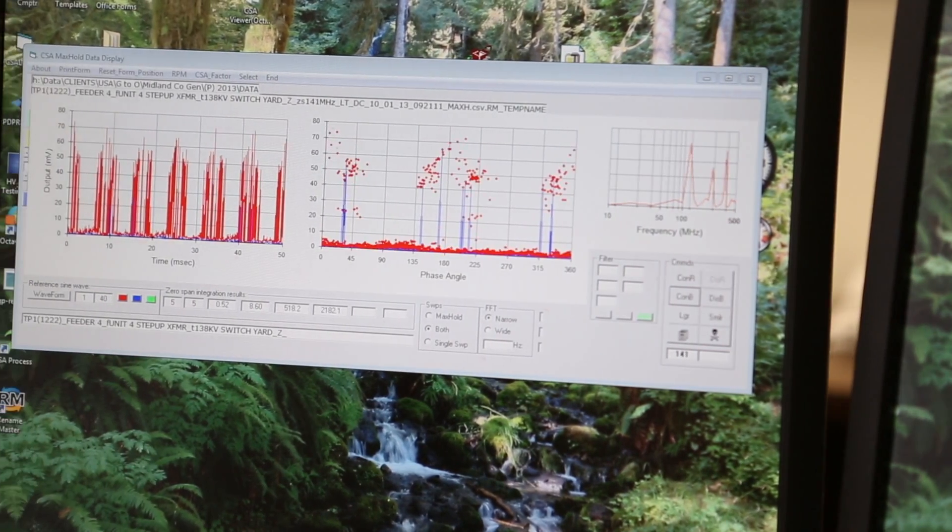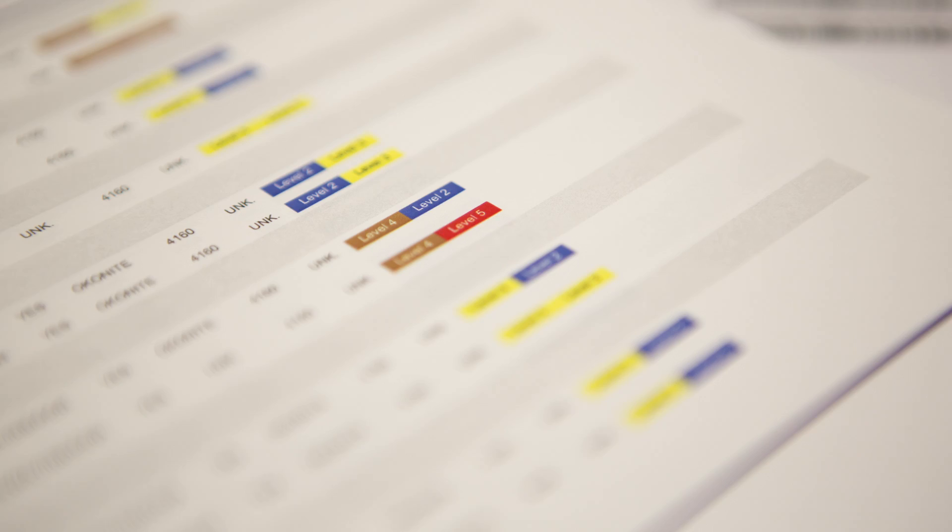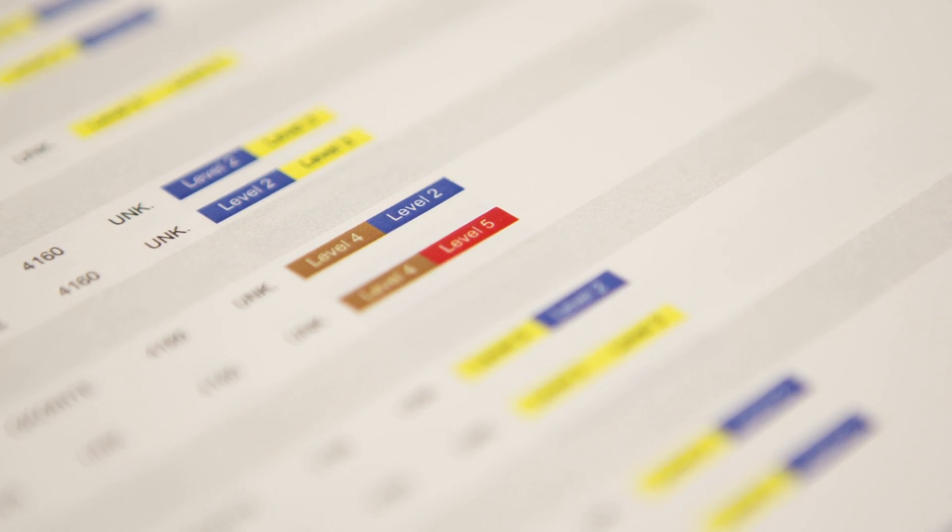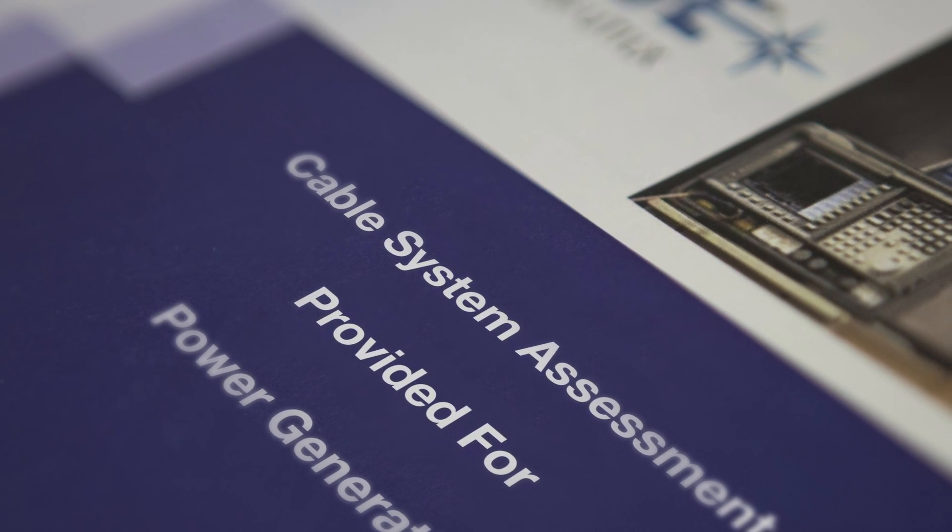After a careful review of all field data, highly trained analysts score each cable and accessory on a scale from 1 to 5. Items that score a 5 require immediate action and are promptly brought to the attention of the customer.